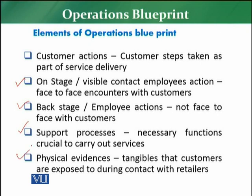The last element of the operations blueprint is Physical Evidence — the tangibles that customers are exposed to during contact with the retailer. For example, a customer enters a retail store and the first tangible thing they encounter is a trolley. If that trolley is defective, its wheels have a problem, it is damaged or broken — that physical evidence is not properly satisfying the customer. This means there are operational gaps and the set of activities is not systematically designed. If the problem is a routine case, it means the system is not in place.